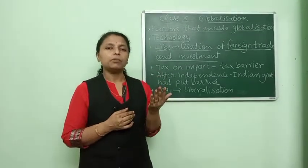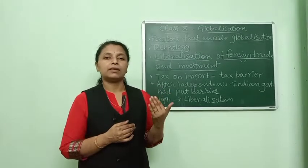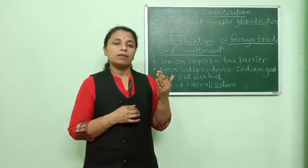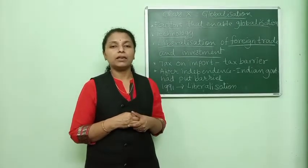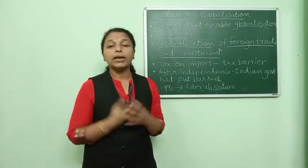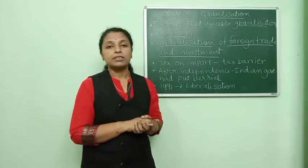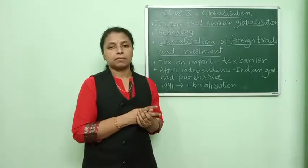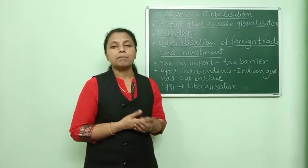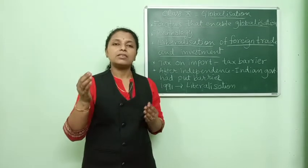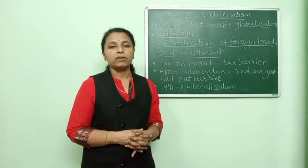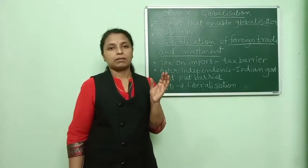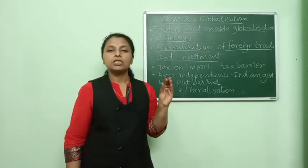Consider the example of Chinese toys flourishing in India. If the government wants to control or regulate this trade, it can put taxes on Chinese toy imports. When taxes are applied, the price of Chinese toys increases, demand falls, and the Chinese manufacturer can no longer earn profit from trade with India. So a tax on imports acts as a trade barrier that regulates foreign trade.